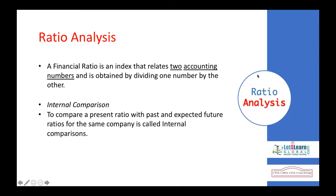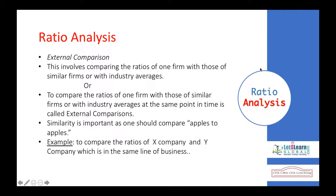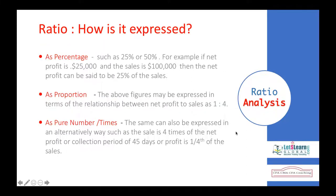A ratio is a number expressed in terms of another — one number called the numerator expressed in terms of the other called the denominator. For example, we have a gross profit amount of 50,000 over net sales of 1 million, so gross profit is expressed as a percentage on net sales. Likewise, we express current assets in terms of total current liabilities — one number expressed as a percentage or numeric value in terms of the other.